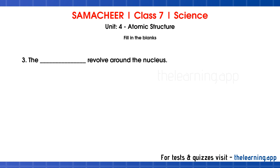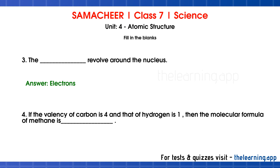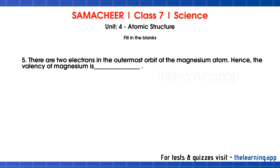Question 3: The dash revolve around the nucleus. Correct answer is electrons. Question 4: If the valency of carbon is 4 and that of hydrogen is 1, then the molecular formula of methane is dash. Correct answer is CH4. Question 5: There are two electrons in the outermost orbit of the magnesium atom. Hence, the valency of magnesium is dash. Correct answer is 2.